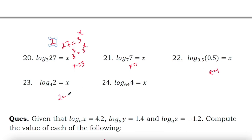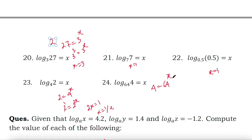Here, 2 equals 4 to the power x. Since 4 to the power x equals 2 to the power 2x, and we have 2 to the power 1 on the left side, with the same base we can write 2x equals 1, therefore x equals one-half. And for log 4 base 64 equals x: 4 equals 64 to the power x, and 64 equals 4 cubed, so 4 equals 4 to the power 3x, which gives 3x equals 1, therefore x equals one-third.